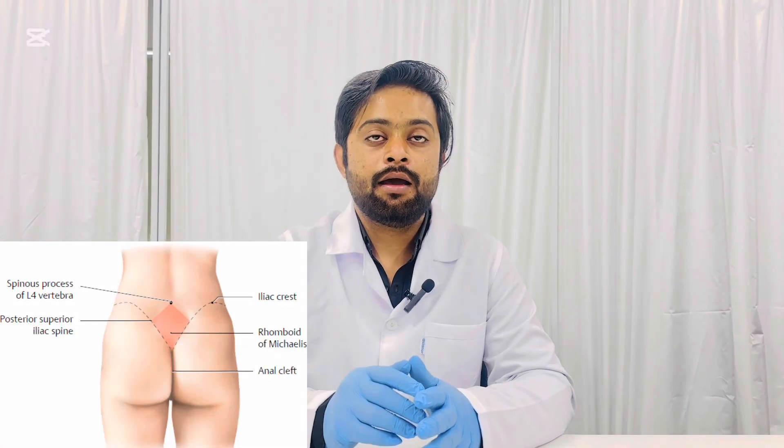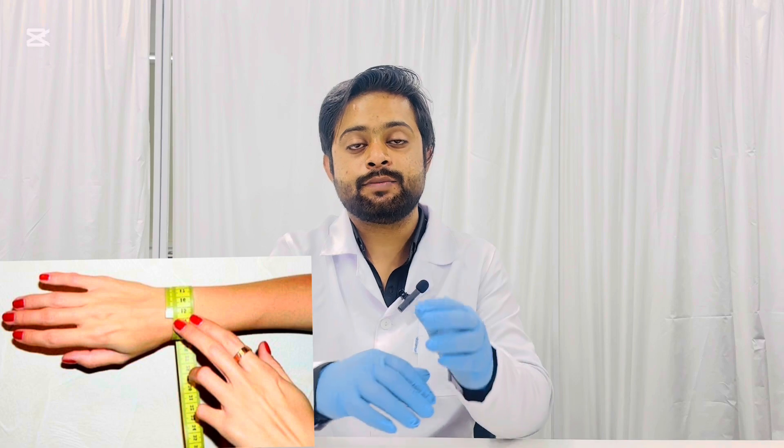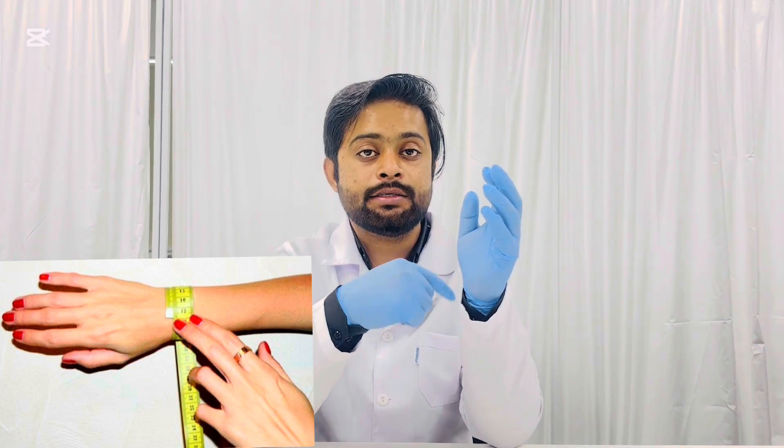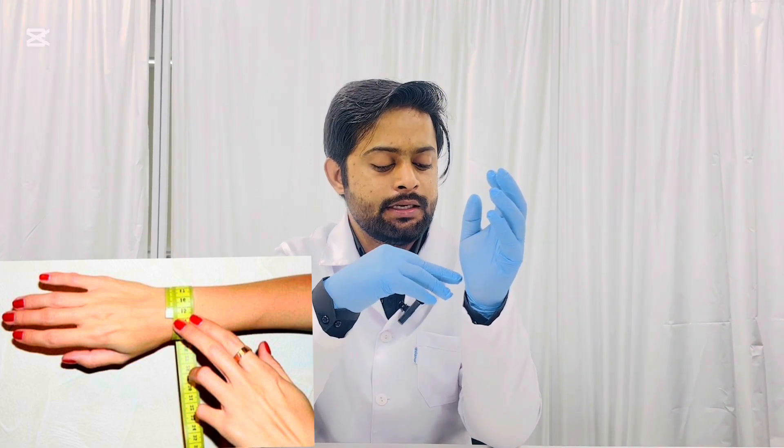We also measure the Michaelis rhombus — it is vertical 11 centimeters and transverse 10 centimeters. Additionally, we measure the slope index, which is basically the radiocarpal circumference, and it is normally 14 to 16 centimeters.